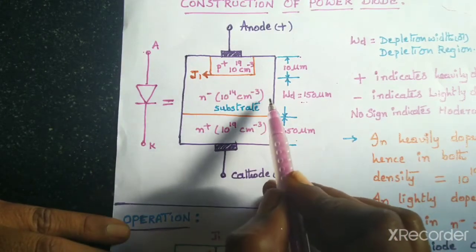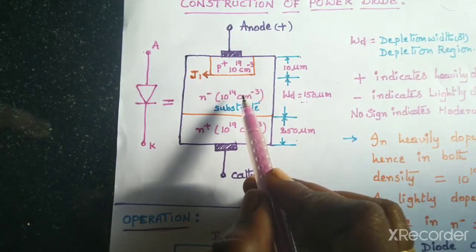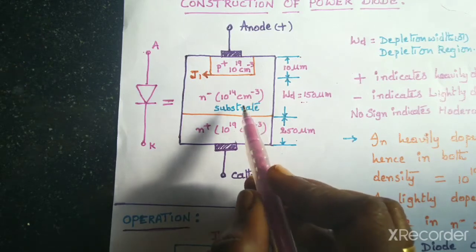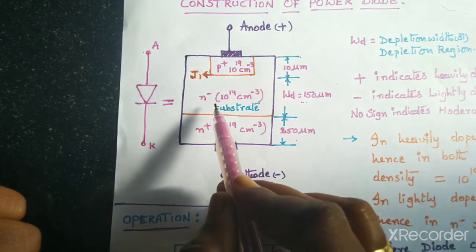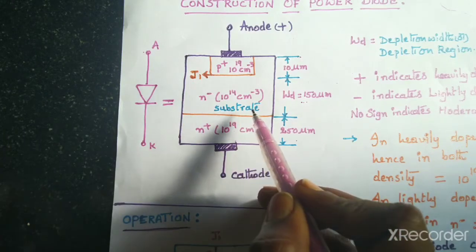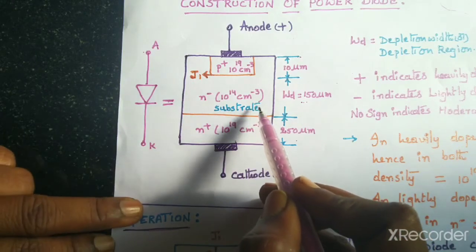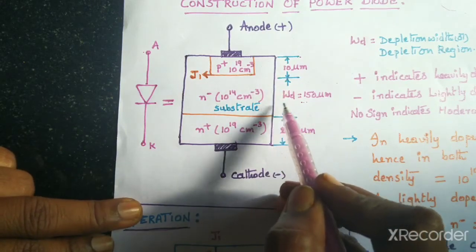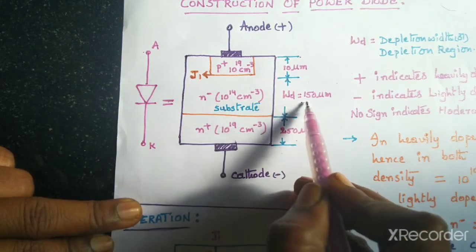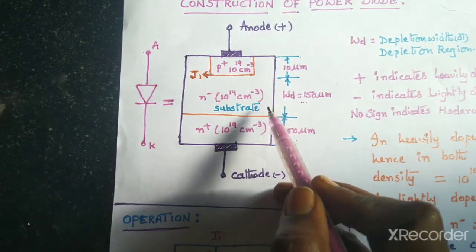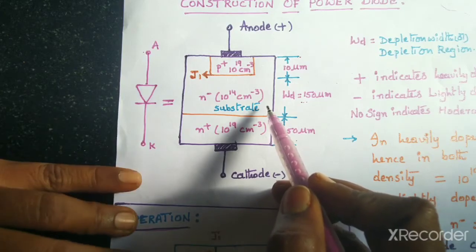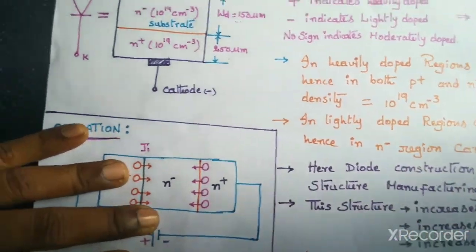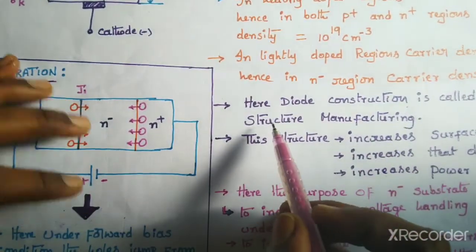The difference between a normal diode and a power diode is the N minus layer. The reason we have included the N minus substrate is to increase the voltage capability. Whenever we include this layer, the depletion region will get increased, and therefore the voltage capability will get increased.